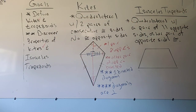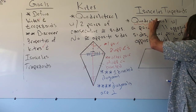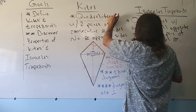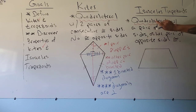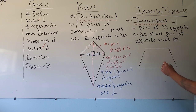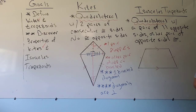Now the last part of our goal today is to define an isosceles trapezoid and discover its properties. An isosceles trapezoid is a quadrilateral — a four-sided shape — with a pair of parallel opposite sides, where the other pair of opposite sides are congruent. Those other sides can't be parallel; if they were, we'd have a parallelogram. We have a different shape here, so it's going to behave differently.